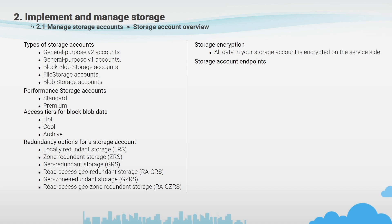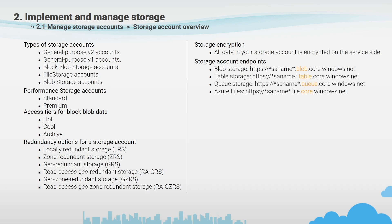Every object you store in Azure Storage has an address that includes your unique account name. The combination of the account name and the Azure Storage service endpoint forms the endpoints for your storage account. For example, if your storage account name is SA name, the default endpoint for blob storage will be: SA-name.blob.core.windows.net, and respectively for the table: storage-account-name.table.core.windows.net, and so on.